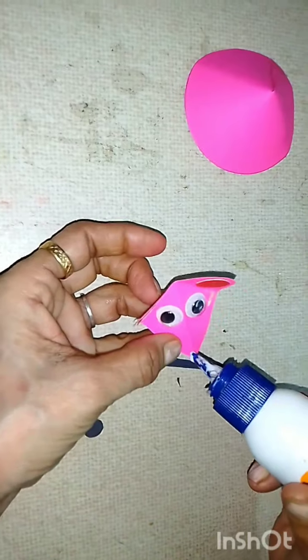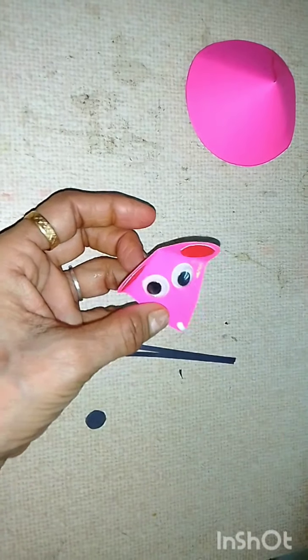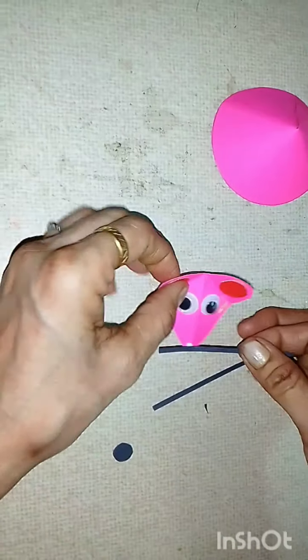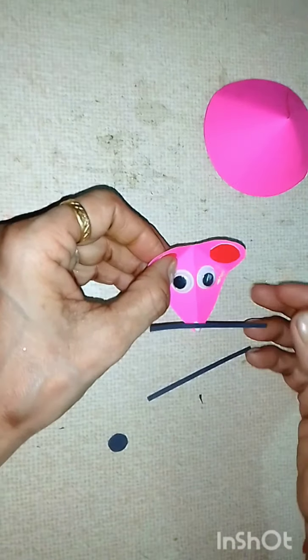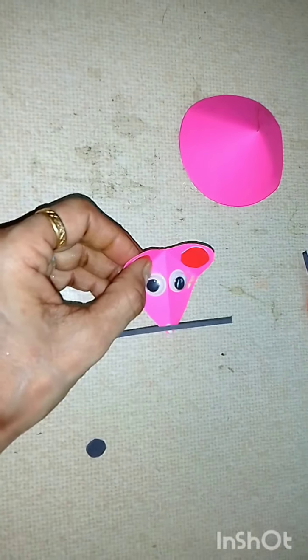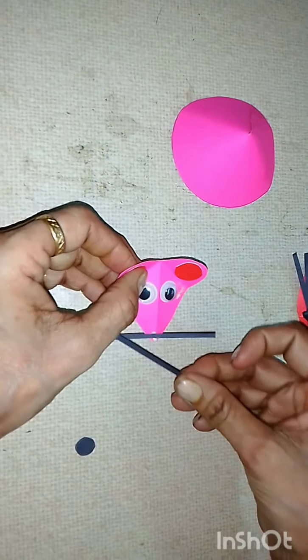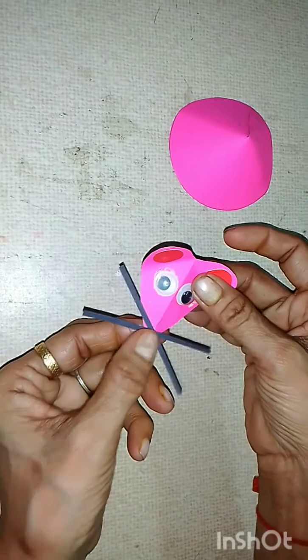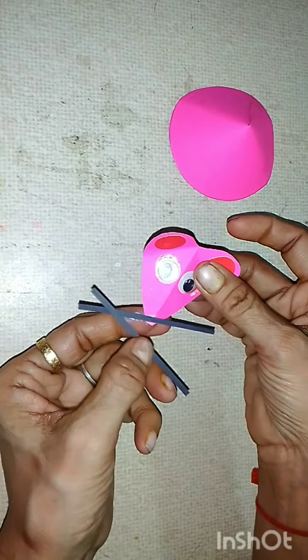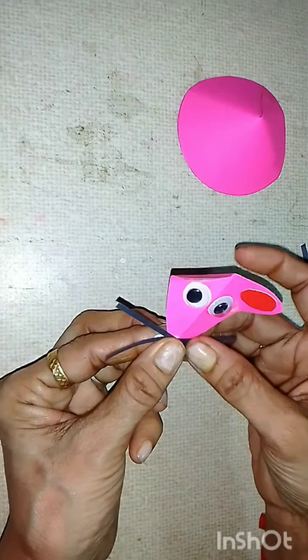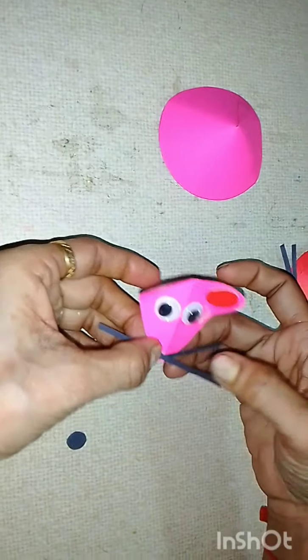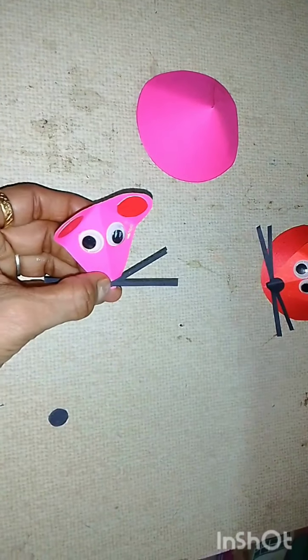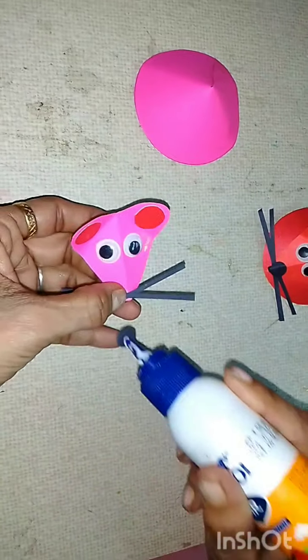Now stick the moustaches on the face of the mouse with the help of glue.